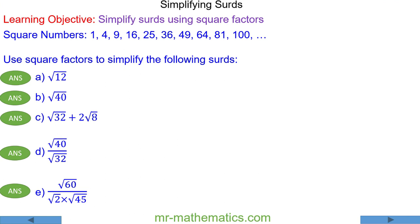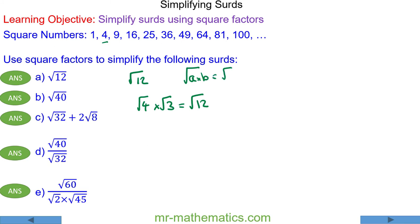In this lesson we're going to simplify surds using square factors. We begin with the square root of 12. The square root of 12 can be simplified using a square factor — in this case 4 — because the square root of 4 multiplied by the square root of 3 makes the square root of 12. This uses the relationship where √(a×b) = √a × √b. So the square root of 4 is 2, multiplied by √3, giving us 2√3.